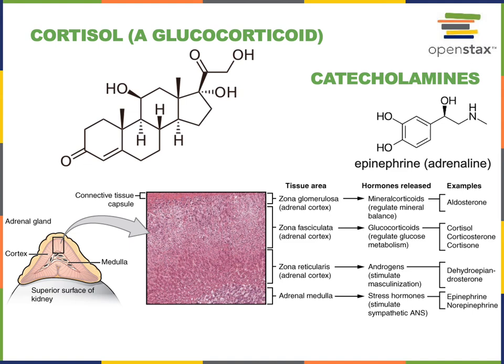Epinephrine, also known as adrenaline, is the major catecholamine hormone produced by the adrenal medulla in response to sympathetic nervous system activity. Norepinephrine is also produced by the adrenal medulla in response to the sympathetic nervous system; these are both catecholamine hormones. They are produced rapidly as an alarm phase of the stress response, working to increase heart rate, increase blood glucose levels, and mobilize energy reserves to help cells in the body respond to stress.